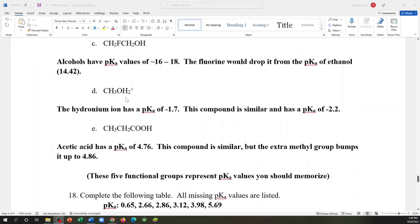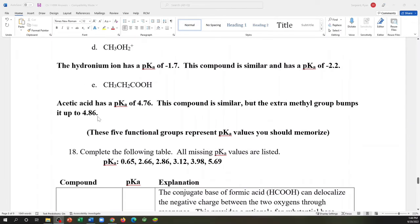This compound is about a negative two. It's a negative 2.2. And then we have propanoic acid has a pKa of 4.86. And this is going to be relevant for the question down here, number 18. But as you continue to add more hydrocarbons, you actually increase the amount of electron density on the hydrogen because they're electron donating groups and your pKa would go up.